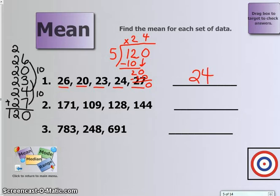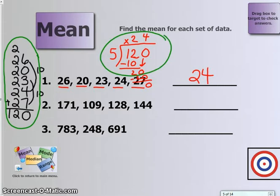And if we go back our first step was to add. Which we did here. We added all of our numbers together. And our second step is dividing. Which we did over here. And we finally come to our answer. The mean is 24.